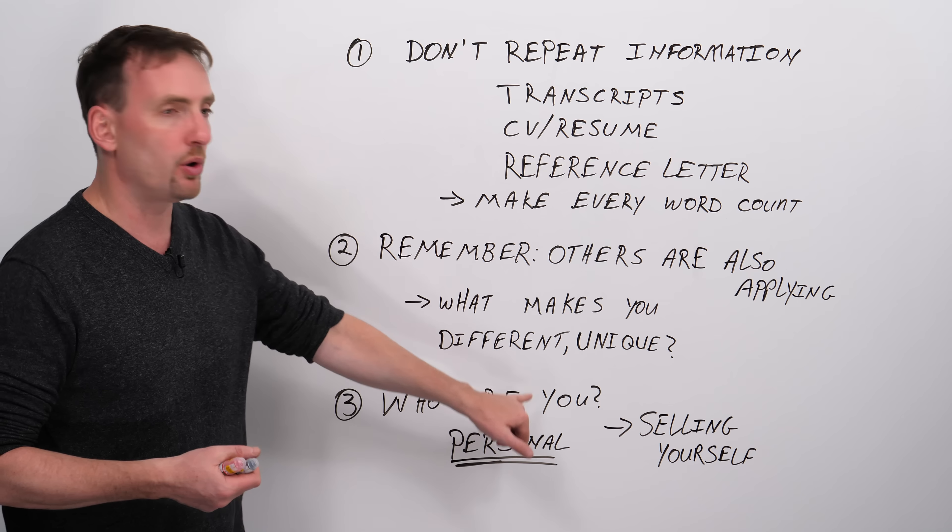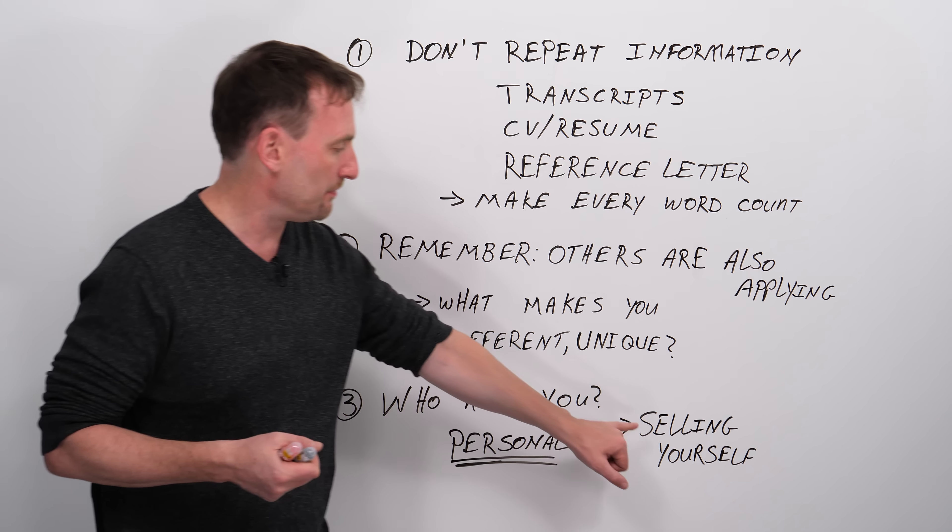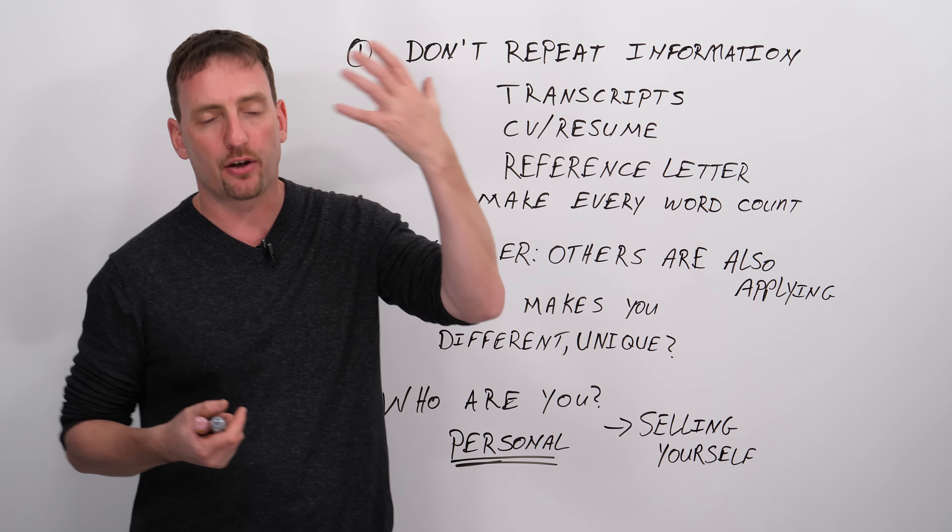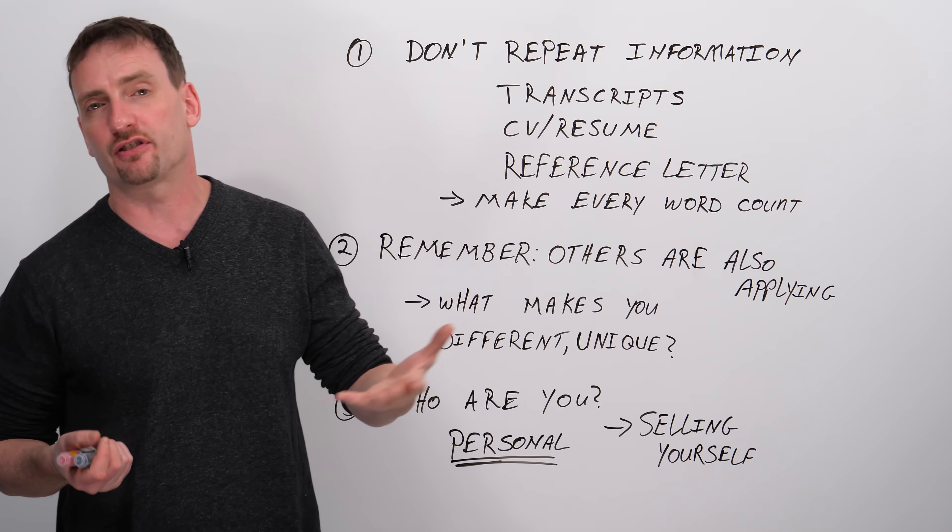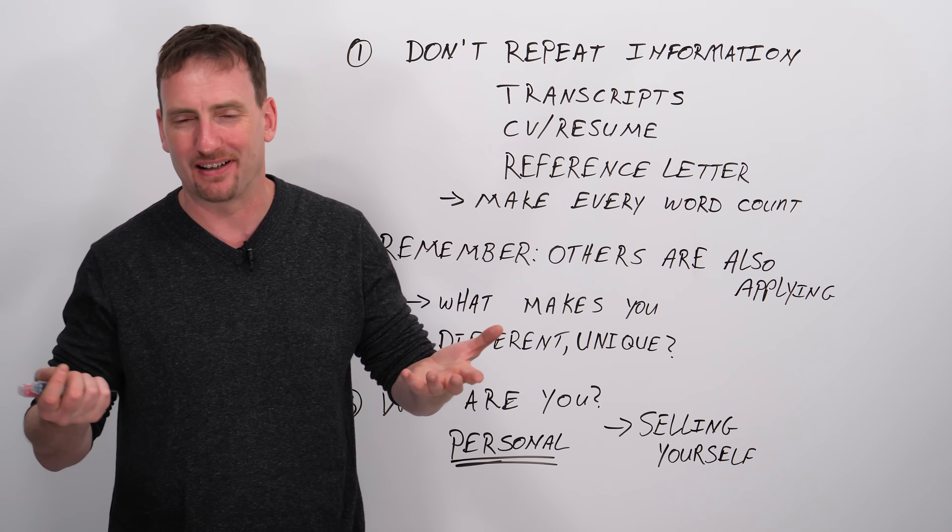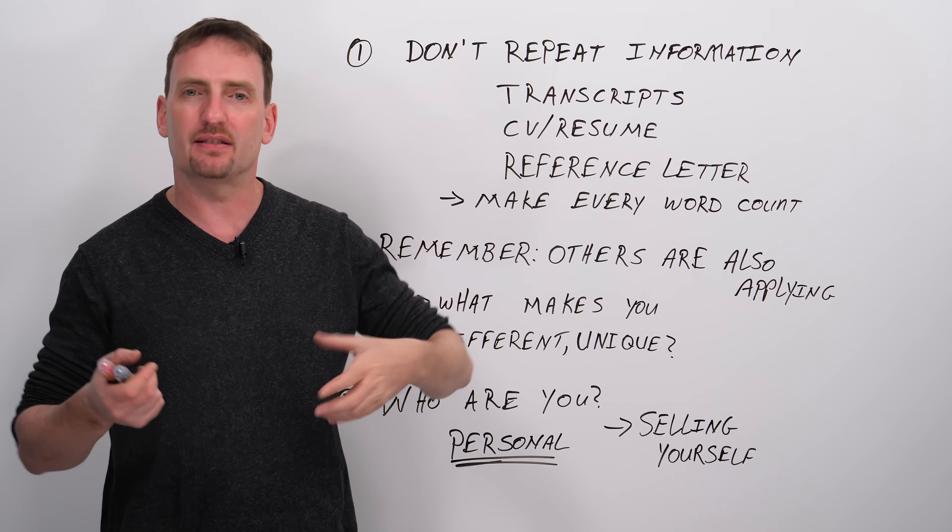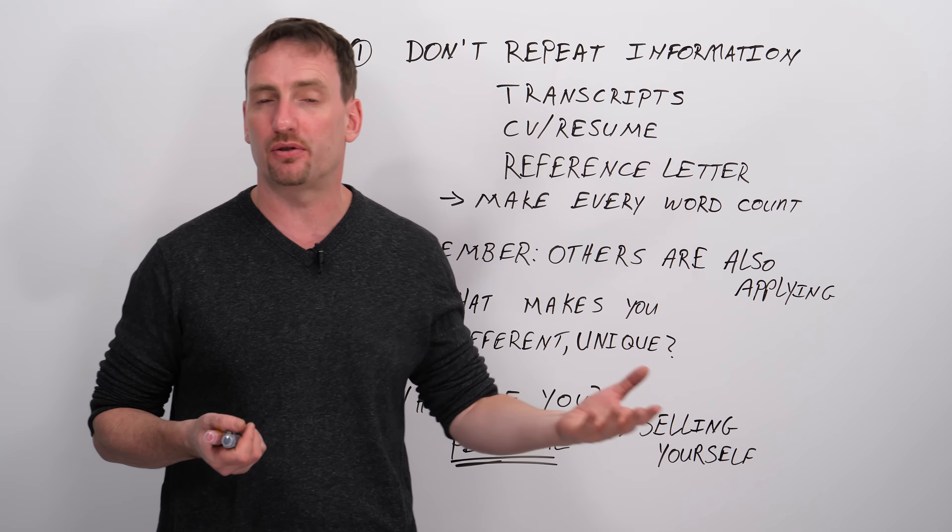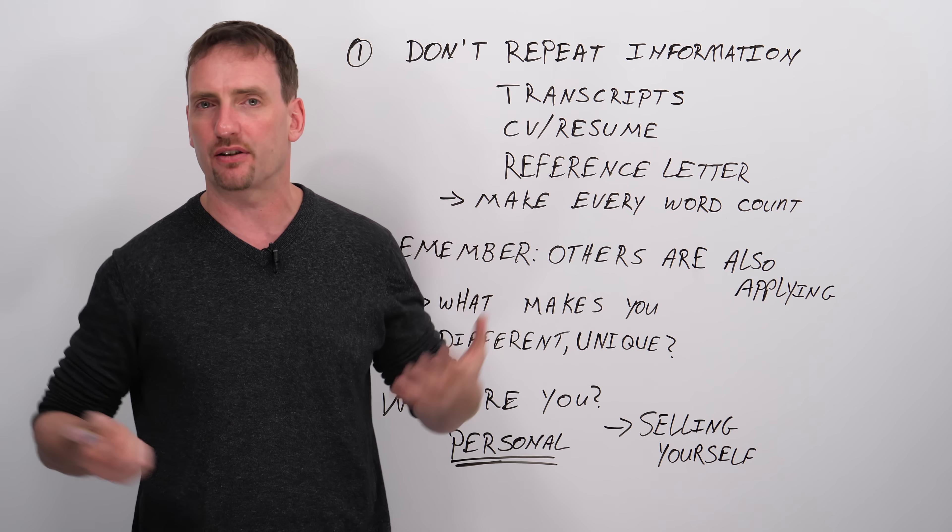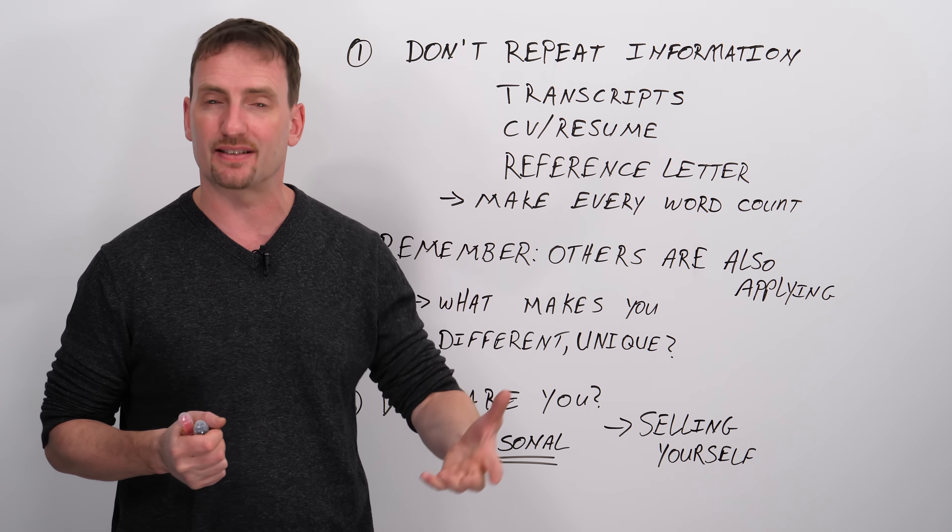How did they make you the person you are today? The person who is going to be a part of the student body at this university? Remember, the admissions officers, when they read these statements, they want to see a person. They don't want to see a transcript. They don't want to see a resume. They don't want to see a copy of all the hundred of other students who are applying. They want to see an individual who has something to offer.